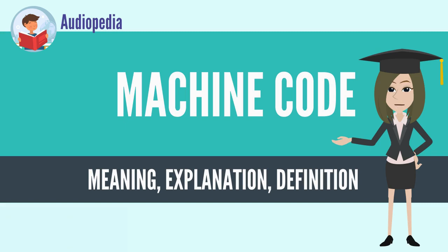Machine code is a strictly numerical language which is intended to run as fast as possible, and may be regarded as the lowest level representation of a compiled or assembled computer program, or as a primitive and hardware dependent programming language.